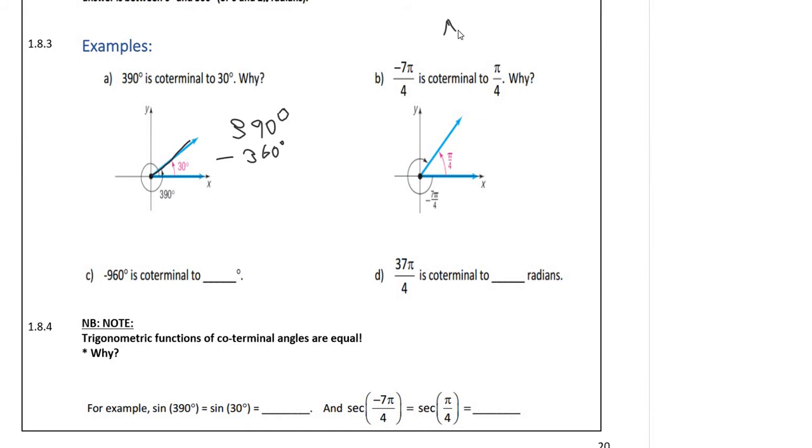Here we have π over 4 in the positive direction and therefore minus 7π over 4 must also be co-terminal because that's just in the other direction. I can find that by π over 4 minus 2π. So if we add 2π or we minus 2π, we will get co-terminal angles.